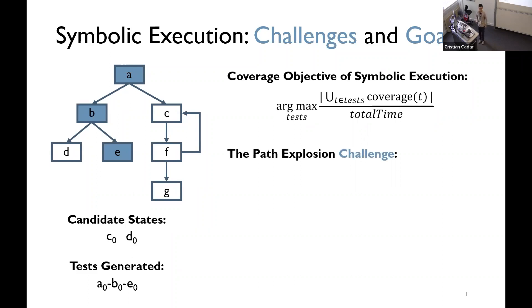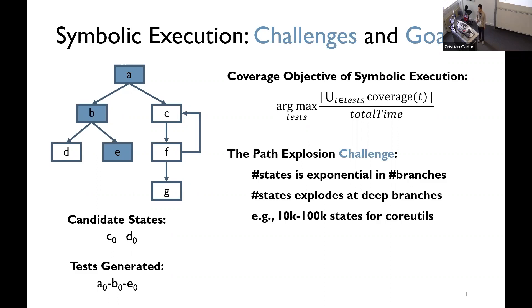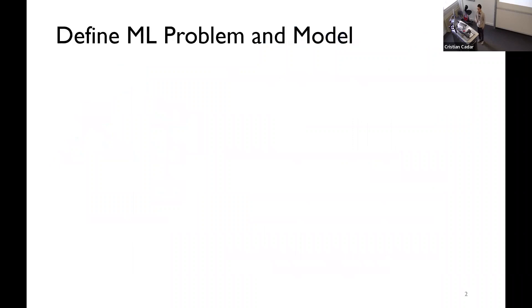There's a well known challenge for path explosion in the symbolic execution. I mean, the number of states is exponential in the number of branches. And, the deeper you go, the more states you have. For example, it can reach a lot of ranges, even for smaller COREUTILS programs. The goal of our work is to obtain a good strategy that can select promising states. And, we solve this with a machine learning approach.